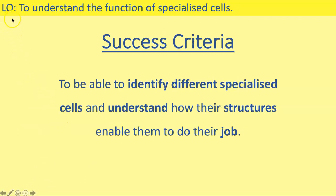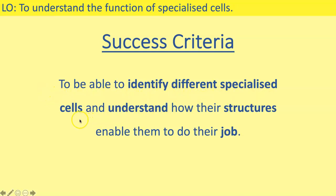Today's learning objective is to understand the function of specialised cells — make sure you write that down. The success criteria for today, which you don't need to write down, are to be able to identify different specialised cells and understand how their structures enable them to do their job.